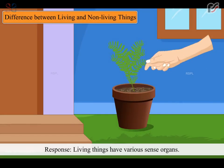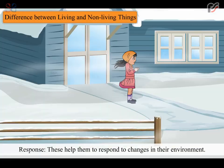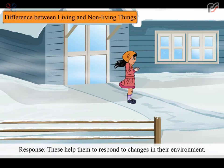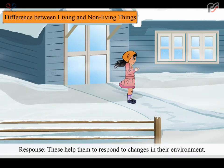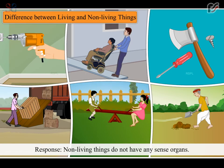Living things have various sense organs. These help them to respond to changes in their environment. Non-living things do not have any sense organs. Hence, they do not respond to changes around them.